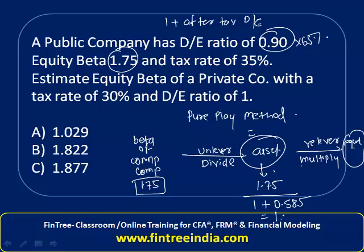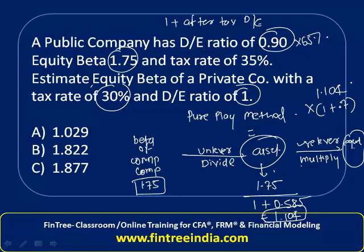Once we have the asset beta of 1.104, we relever it by multiplying by 1 plus the after-tax debt-equity ratio of the private company. The private company's debt-equity ratio is 1 and the tax rate is 30%, so the factor is 1 + (1 × 0.70) = 1.7. Therefore, equity beta = 1.104 × 1.7 = 1.876, and the correct answer is option C.